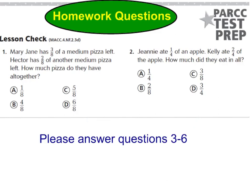Now let's move on to the back side for your homework questions. For number 1, it says Mary Jane has 3/8 of a medium pizza left. Hector has 2/8 of another medium pizza left. How much pizza do they have all together? Go ahead and answer that one, A, B, C, or D. And for number 2, Jeannie ate 1/4 of an apple. Kelly ate 2/4 of the apple. How much did they eat in all? Go ahead and answer that one, and then answer 3 through 6 on your own as well, that we'll check tomorrow in class.